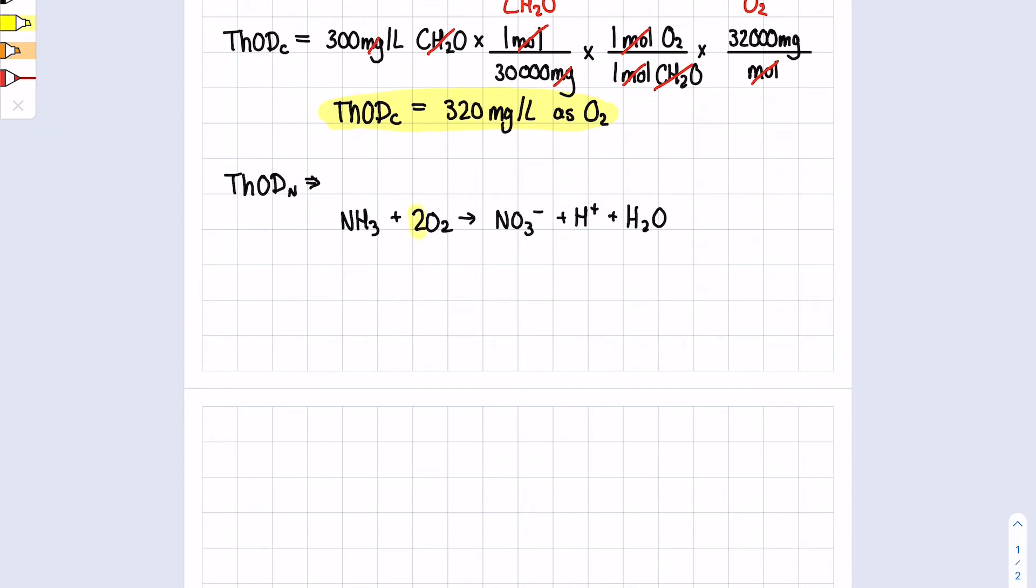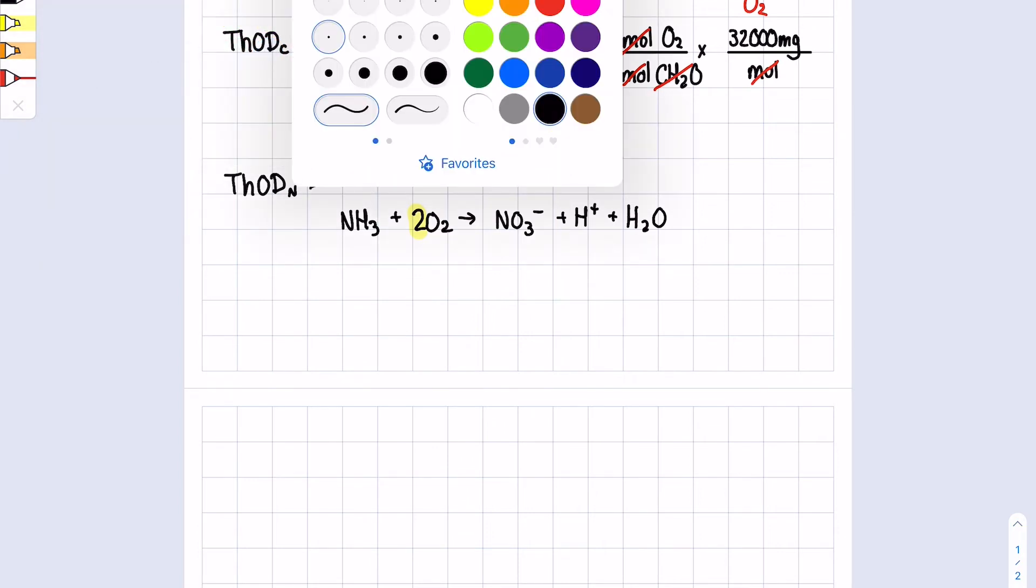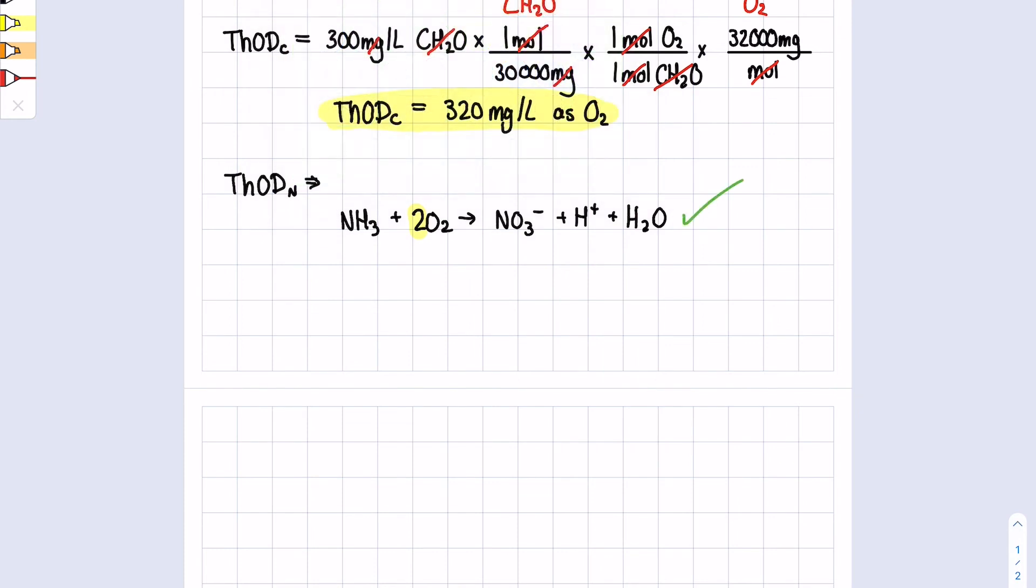Let's just make sure: we have one nitrogen on the reactants, one nitrogen on the products, three hydrogens, three hydrogens, and four oxygens, four oxygens. So this would be considered balanced, perfect.